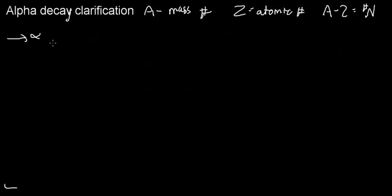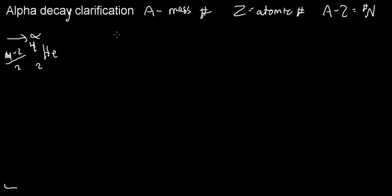If we do A minus Z, we get the number of neutrons: four minus two equals two — perfect. So when does alpha decay occur? I took an example from Caltech: the element seaborgium.